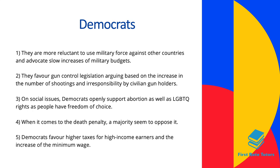Thirdly, when it comes to social issues, Democrats openly support abortion as well as LGBTQ rights, as people should have the freedom of choice. Fourthly, a majority of Democrats tend to oppose the death penalty. Fifthly, Democrats favour higher taxes for high income earners and an increase of the minimum wage by the government — favouring a governmental approach to imposing a basic minimum wage that all employers must follow.